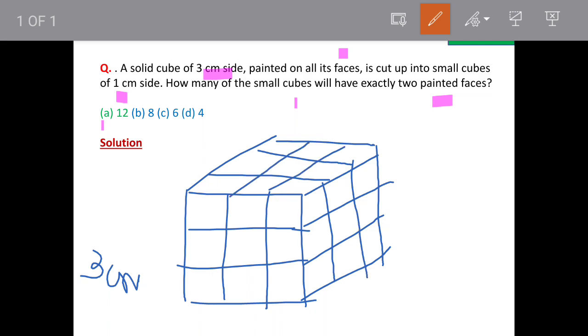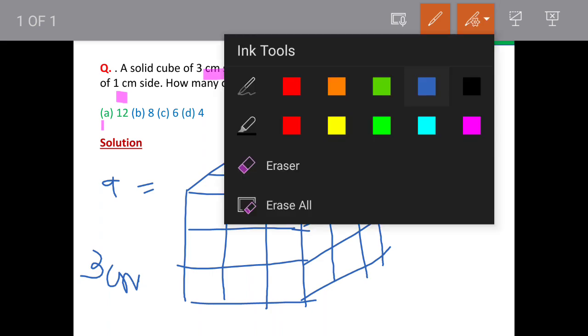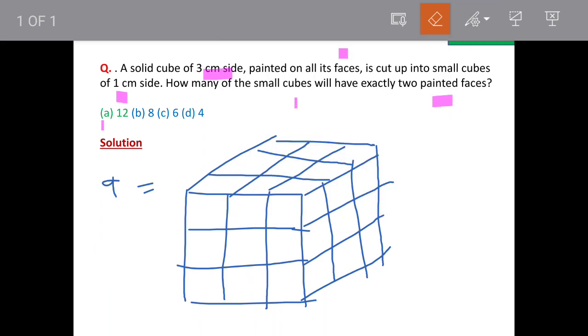So you can see the top layer will have total 9 cubes. Then middle layer will also have 9 cubes. You can count them—and bottom layer will also have 9 cubes. When it is cut into cubes of 1 cm side each because each side is 3 cm.